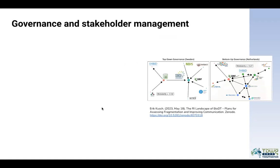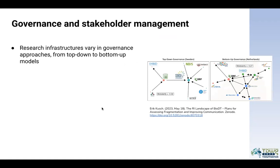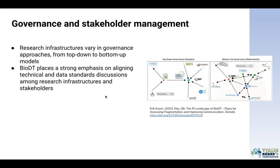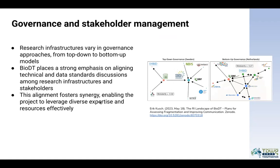Governance and stakeholders are an important component alongside the technical implementation. As research infrastructures vary in governance approaches — for example, there are differences across countries with top-down and bottom-up models — we place a strong emphasis on aligning the technical and data standard discussions among research infrastructures and stakeholders. This alignment will foster synergy and enable the project to leverage diverse expertise and resources effectively. In this study, we looked into how this fragmentation differs and how we can come together to provide the background for digital twin building.